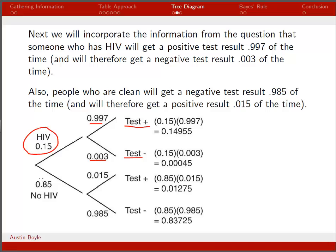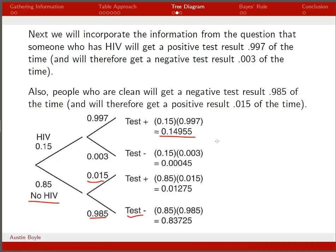Moving along the no-HIV branch, we're told we get a negative result 0.985 of the time, so the remaining 0.015 must be for a positive test. To find the final probabilities, we multiply the first branch times the second branch. For testing positive with HIV: 0.15 × 0.997. For testing negative with HIV: 0.15 × 0.003. You can check your work by confirming all four end probabilities add up to 1.